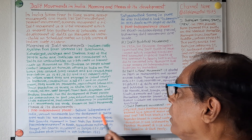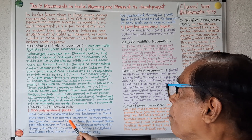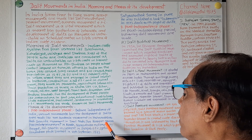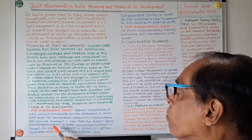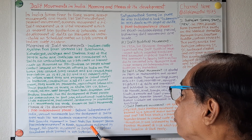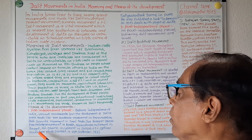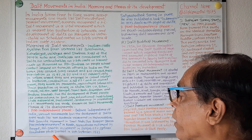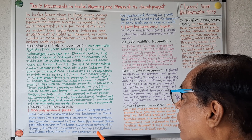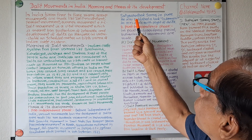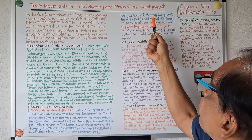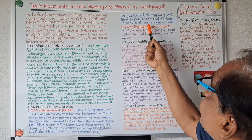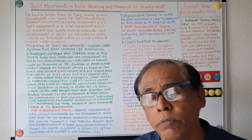Before independence, various movements for the development of Dalits were made: the Non-Brahmin movement in Maharashtra, the Adi-Dravid movement in Tamil Nadu, the Sree Narayana Dharma Paripalana movement in Kerala, the Namasudra movement in Bengal, the Adi Dharma movement in Punjab, etc. Jyotirao Govindrao Phule formed Satya Shodhak Samaj in Pune on 24th September 1873. He also published a book, Gulamgiri in 1873, which deals with the plight of Dalits.